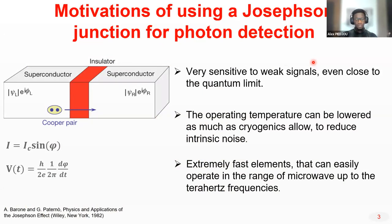As a radiation detector, the Josephson Junction are extremely sensitive to very weak signals, since they can reach very high response close to the quantum limit. Also, the Josephson Junction operate at very low temperature and the noise can be reduced as well. Another interesting feature is that Josephson Junctions are extremely fast elements and can easily operate in the microwave up to hundreds of terahertz frequency.